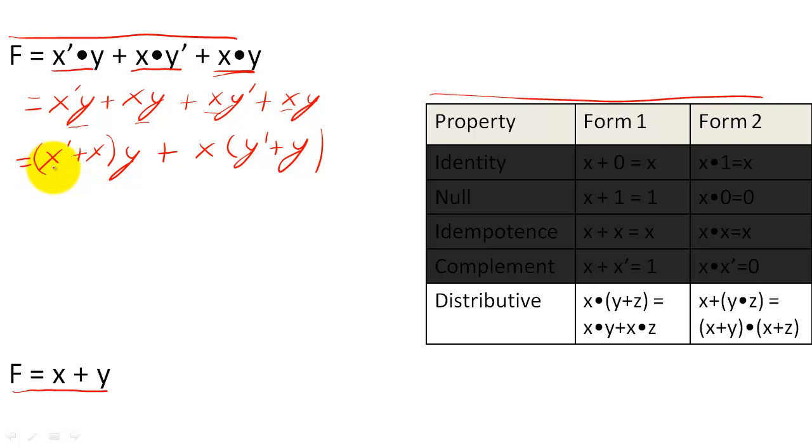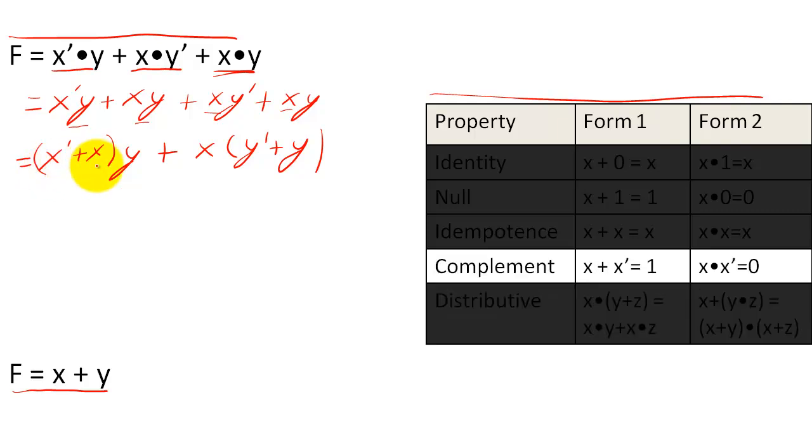Now, since I have this x prime or x, that is going to be my complementarity property. And I can see that x or x prime is equal to one. So I have one ANDed with y or x ANDed with one.